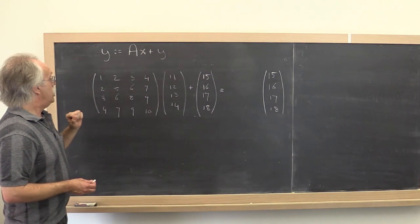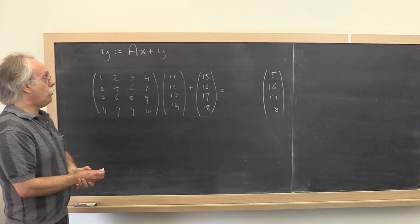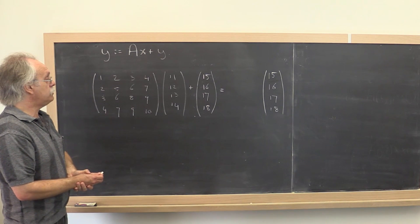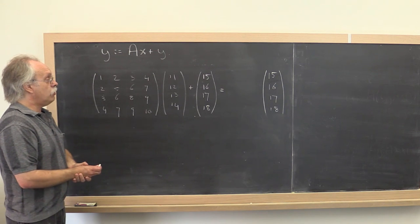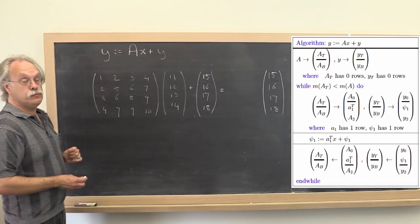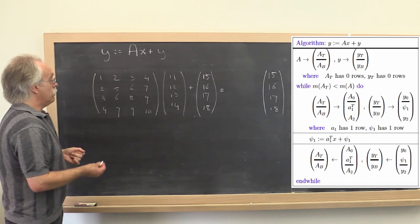And we had two algorithms for computing this. And the first algorithm would do so by rows. And how would that algorithm operate?